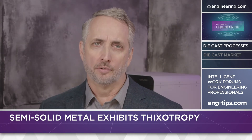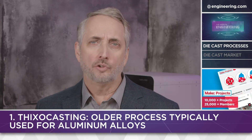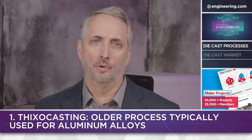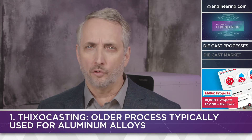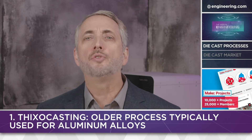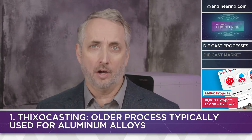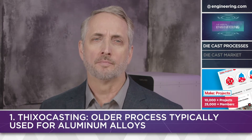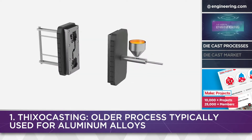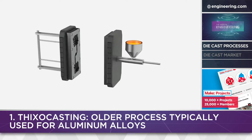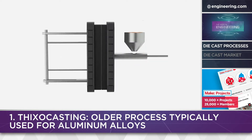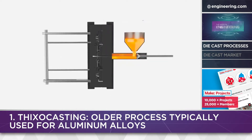There are three distinct semi-solid casting processes. First, thixocasting is an older process typically used for aluminum alloys. It requires a specially pre-cast billet with a non-dendritic microstructure, adding significant cost to the process. This billet is then induction heated to form a semi-solid within a conventional die casting machine before being injected into a die. This process makes it very difficult to reuse materials, as scrap must first be recast into that billet with the correct microstructure.